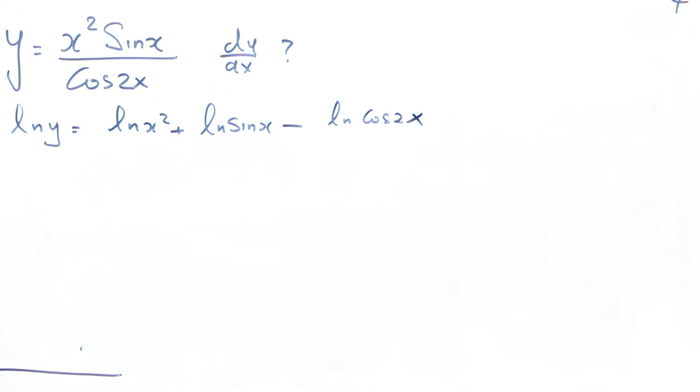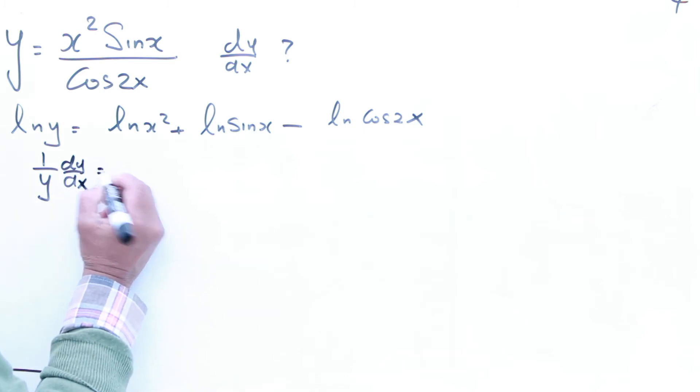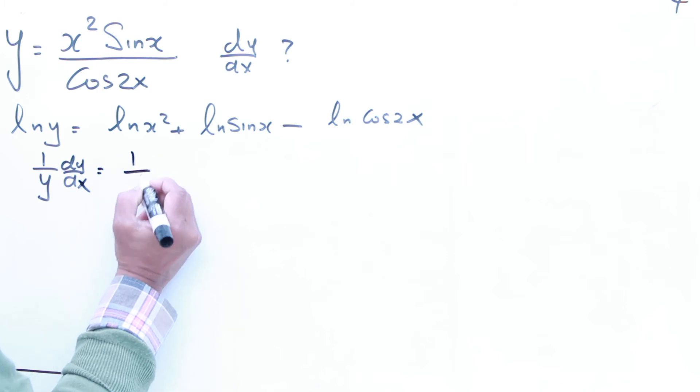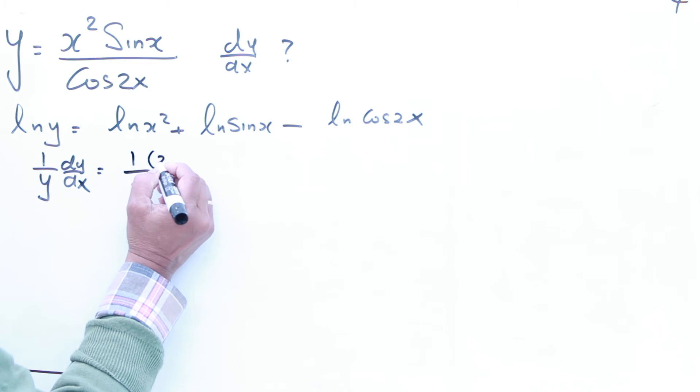So now we differentiate it with respect to x. If you differentiate this one, that is an inverse function, so I am going to say ln is always 1 over y, because y, it will be dy over dx. Then this one will come 1 over x squared, then it is a chain rule, so you have to differentiate that, that will be 2x.